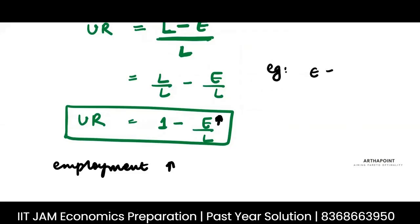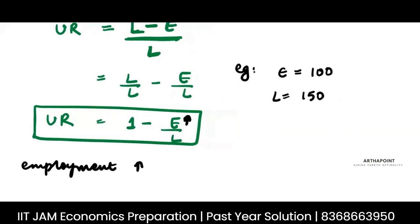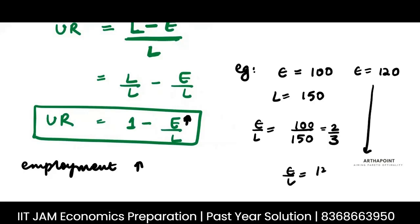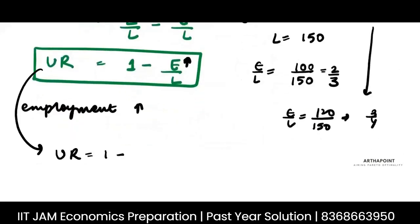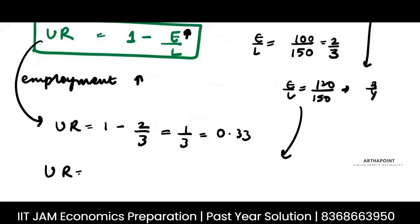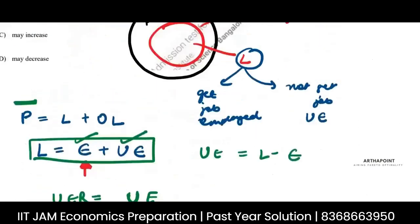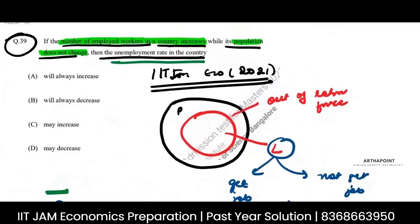For example, if people who were employed were 100 and labor force was 150, and now people who are employed have become 120, the employment rate E/L earlier was 100/150 = 2/3. The employment rate now is 120/150 = 3/4. The unemployment rate earlier was 1 minus 2/3 = 1/3 ≈ 0.33, and now it is 1 minus 3/4 = 1/4 = 0.25. So from this you would think that the unemployment rate will always decrease.